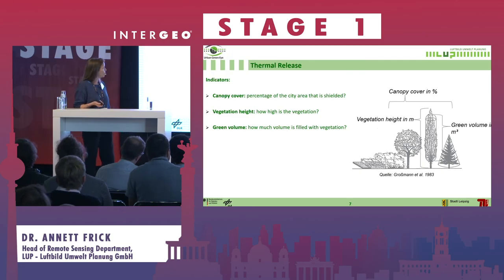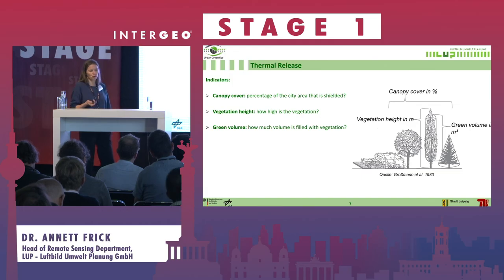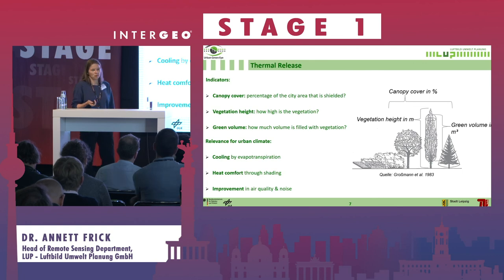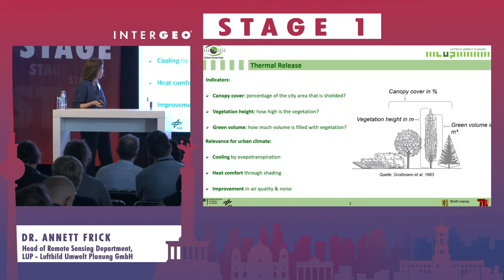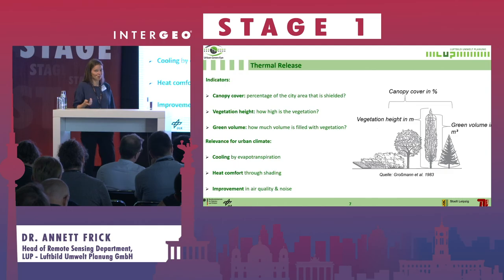Another very important use case is the monitoring of vegetation. We have lots of indicators relevant to thermal relief: canopy cover, which provides shading; vegetation height, which is important for green volume monitoring and carbon sequestration monitoring. All these indicators are very relevant for cities and climate adaptation because they provide cooling through evapotranspiration, improve air quality, and help decrease noise pollution. To use a buzzword, planting trees is a nature-based solution.